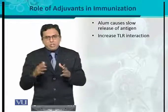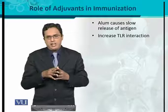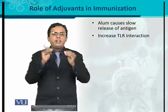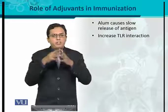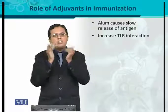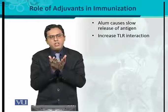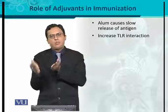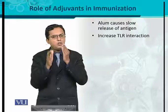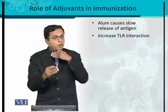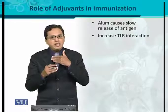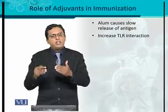Alum also causes increased TLR (Toll-like receptor) interaction. When the antigen enters the body, it interacts with phagocytes. Phagocytes are immune cells that have Toll-like receptors on their surface, which interact with the antigen to provide an immune response. If TLR activation is proper, then the immune response will also be appropriate. Adjuvants cause an increase in TLR interaction with certain antigens.